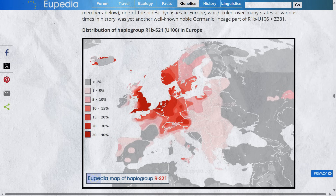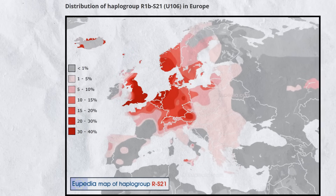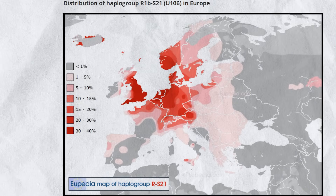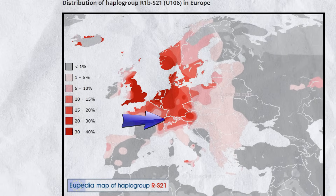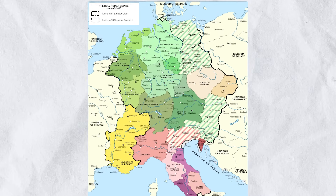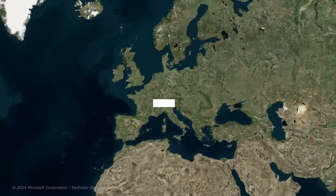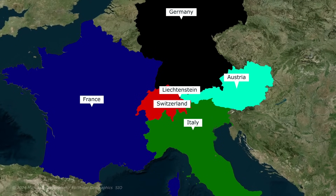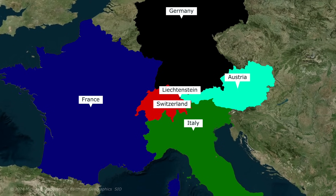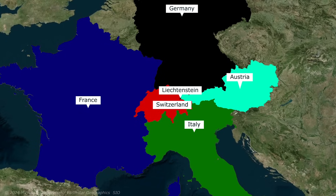If we look at this map of R1B-U106, also known as S21, we can see it is highest in northern Europe today, and in parts of north and northwest Switzerland. Switzerland would later become part of the Holy Roman Empire for centuries, an empire that grew out of the Franks to a large degree. Over the centuries there has obviously been lots of movement from neighbouring countries into Switzerland, with significant migration from Italy in the late 19th and early 20th century for example.